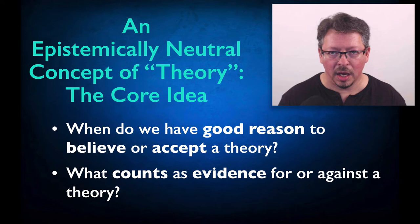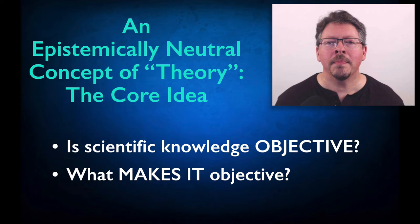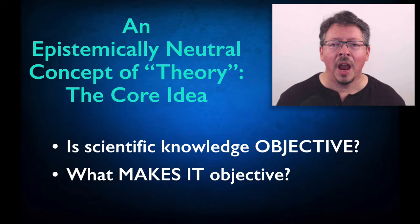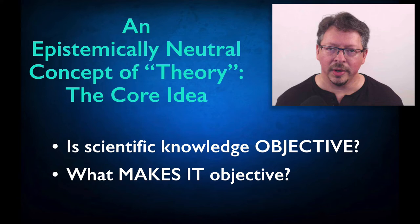We want scientific knowledge to be objective in some sense. But what does this mean? And if it is objective, what makes it objective? Historically, our efforts to understand what scientific theories are have been tied up with our efforts to justify or ground the objectivity and the knowledge that is captured in those theories. And this has led to a certain way of thinking about theories, which I'll now present, but which I'm shortly going to criticize.